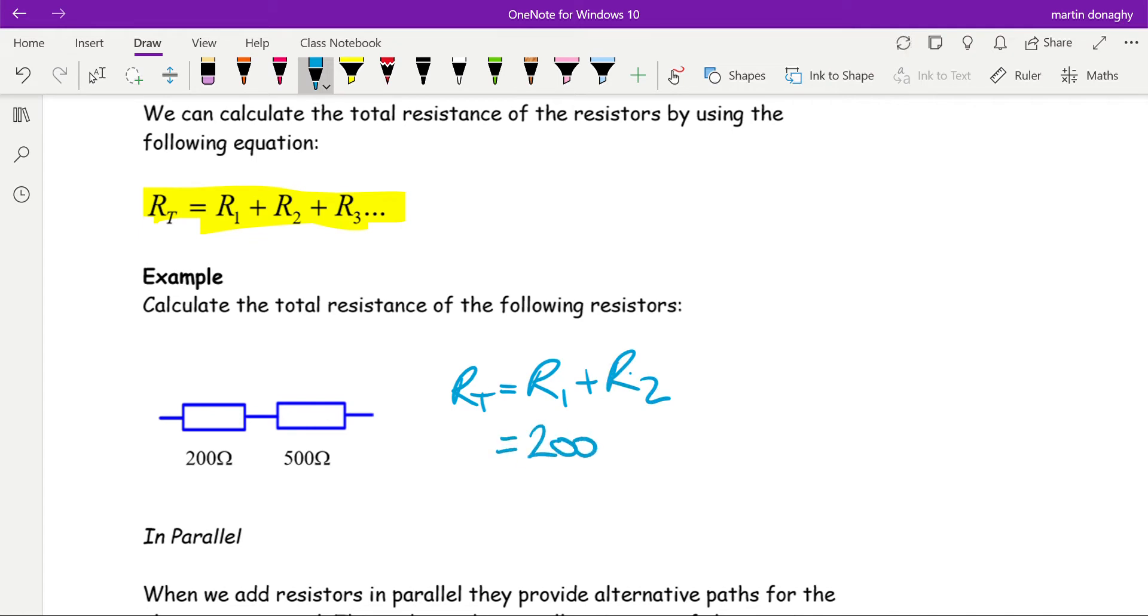And that means it's 200 plus 500, which is 700 ohms. So what we're saying is they are equivalent to a single resistor of 700 ohms.